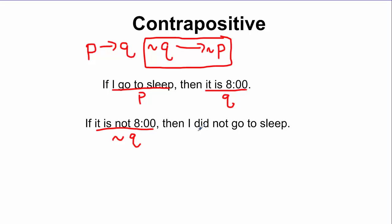The conclusion now says 'I did not go to sleep.' For the contrapositive, you take the original hypothesis and it's going to become the conclusion, but you also do the negation of the hypothesis. So 'I go to sleep' — the negation is 'I did not go to sleep.' Since my hypothesis is P, the negation of P would be that. So here I have my contrapositive: if it is not 8 o'clock, then I did not go to sleep.